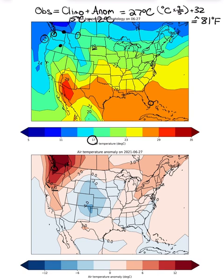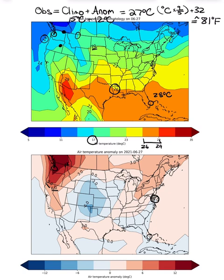Let's check out Miami. Going down to Miami, I've circled it in the lower right corner. It's a little tough to tell, but it is somewhere in this orange bin, between the 26 and 29 contours — let's say around 28 degrees Celsius. That is the average temperature in Miami on June 27th. The anomaly is straddling the line between light blue and light red, and looking closely, that contour represents zero. So Miami on this day was experiencing temperatures pretty much right on its climatological average.